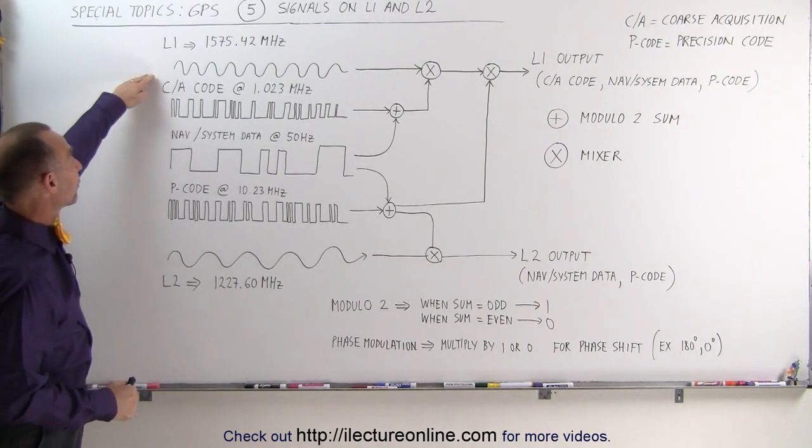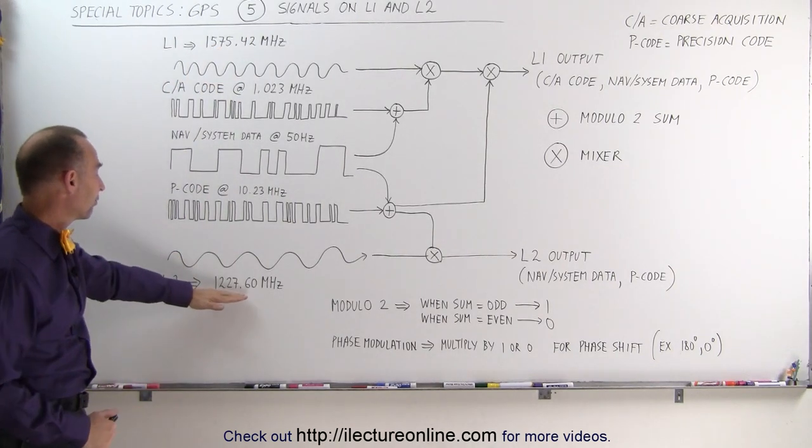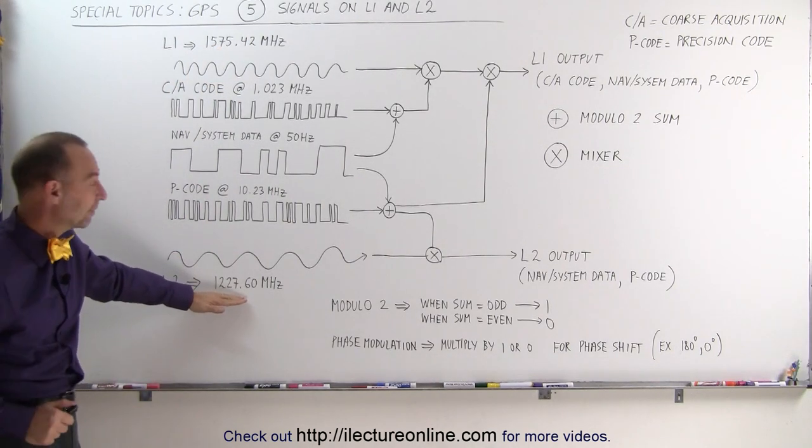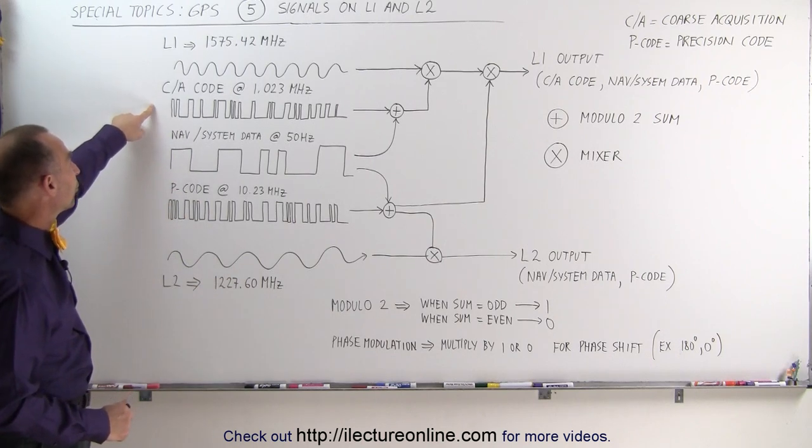Notice L1 has a carrier frequency of 1575 MHz, and L2 has a carrier frequency of 1227 MHz. We have three additional signals that are superimposed.